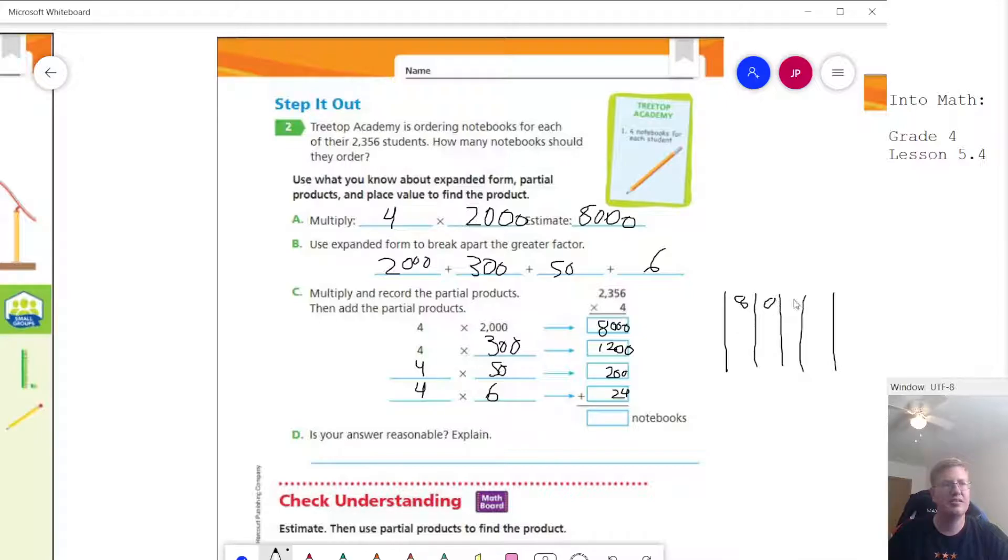So we could do 8,000, 200 could go like this, 24 could go like this, to make sure that we have the numbers lined up so that we don't make any mistakes. Because usually what ends up happening is we start crunching these numbers and then we start putting them in the wrong spot when we line them up, which gives us errors in our addition.